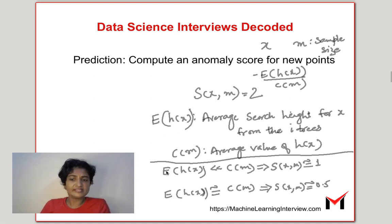If we find that the expected value of h of x is much smaller than the depth of finding an average point, which means this is almost equal to 0, so 2 power 0 is 1, so s of x, the anomaly score will be close to 1.